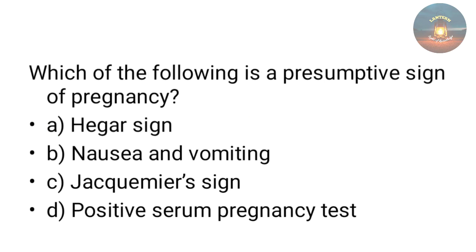Which of the following is a presumptive sign of pregnancy — Hegar sign, nausea and vomiting, Jacquemier's sign, or positive serum pregnancy test? The answer is nausea and vomiting. It is a presumptive sign.